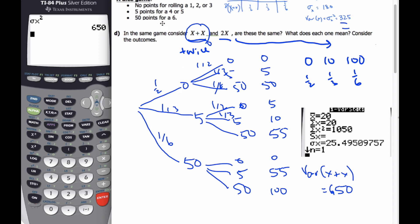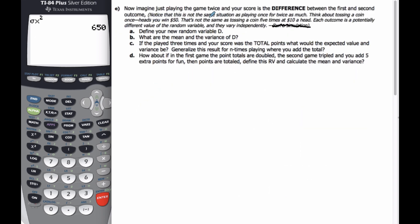But let's do something similar. Imagine I play the game twice, and my score is the difference between the first and second game. It's not the same situation as playing it twice as much. So I'm going to look at my first game minus my second game. And again, when I look at those possibilities, I could get a 0, and from 0, I could get 0, 5, or 50 a second time. So if I subtract them, I get 0, negative 5, or negative 50 as my point total. And this is equal to my random variable D.